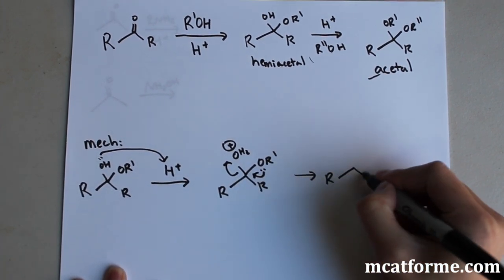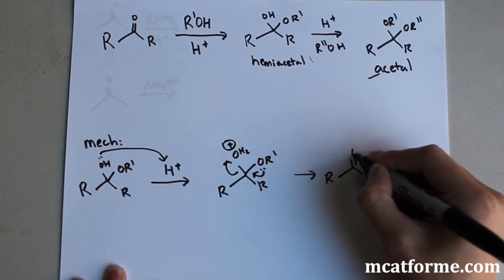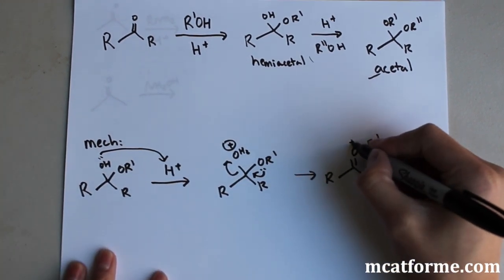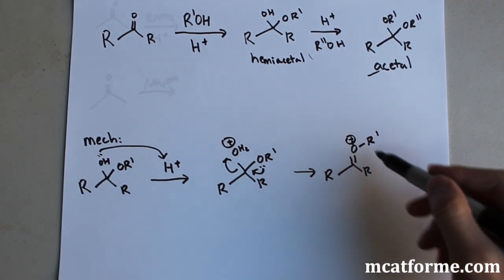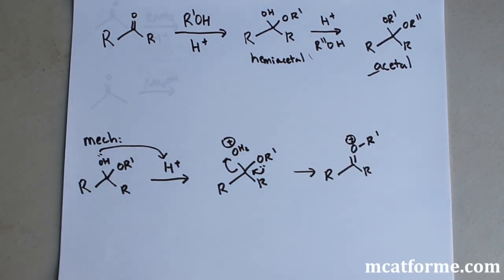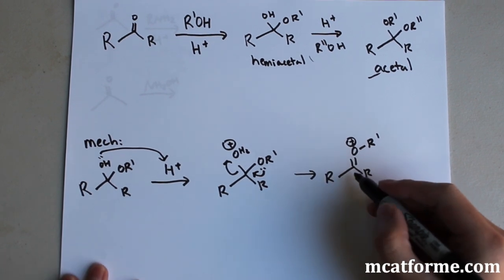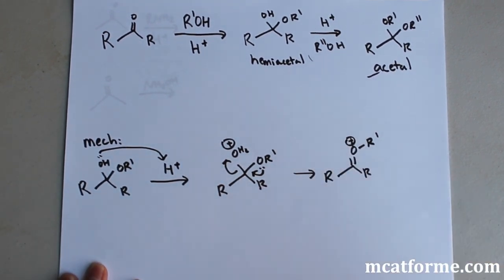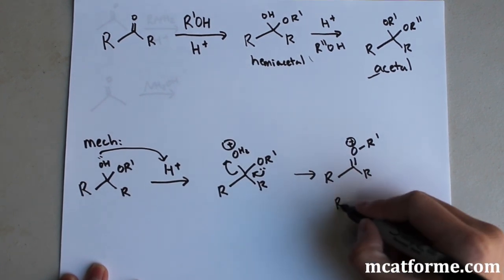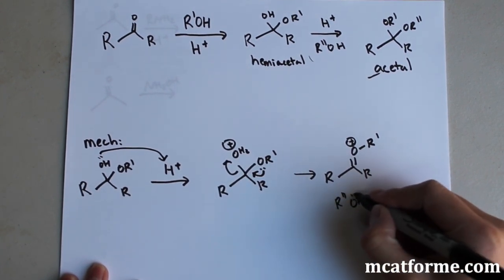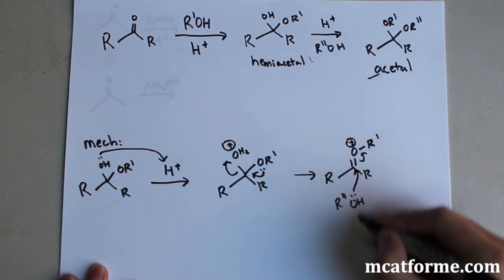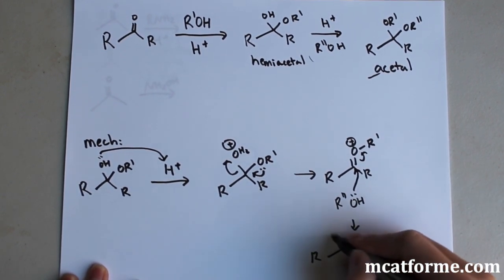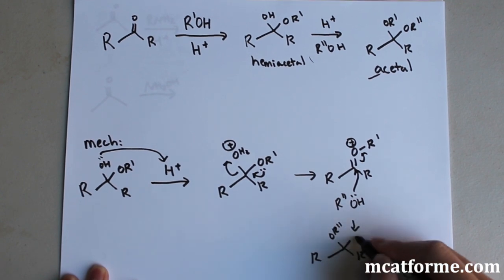And then what's going to happen is we're going to get something like this and we're going to have the double bond moving down like that. And now we see that there's going to be a charge on here so that we can attack it similar to the Grignard reagent. So when we do that, we're going to get something like this, it's going to move up.